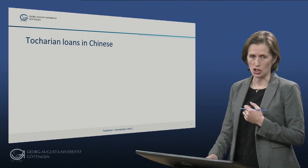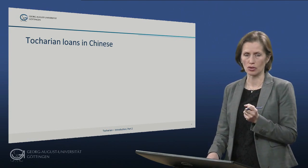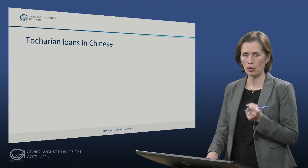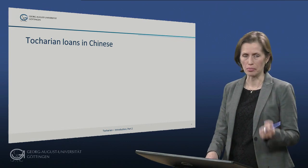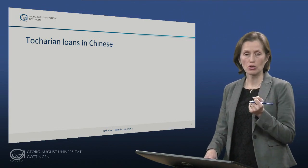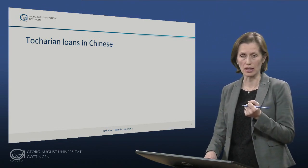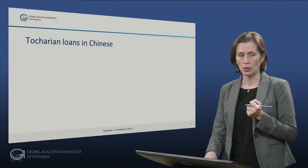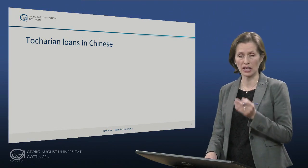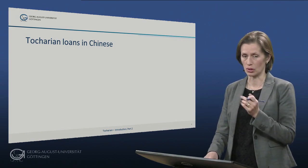There are also Tocharian loans in Chinese. In the absolutely earliest stages of Chinese we have loans from Indo-European which are very likely from before some state of Indo-European became a very early state of Tocharian. The loans from Indo-European into Chinese target several important innovations such as the word for wheel, and later loans from Indo-European into early Chinese can be identified by their phonology as being some sort of very early or pre-Tocharian.